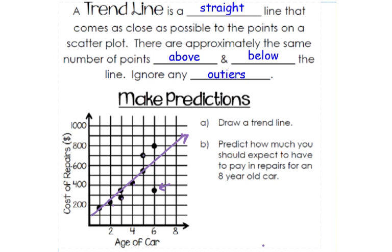Even though I have two above and one below, that's okay because we want about the same number above and below. Part B says: Predict how much you should expect to have to pay in repairs for an eight-year-old car.